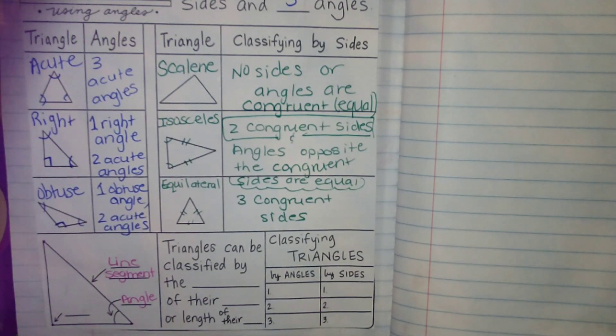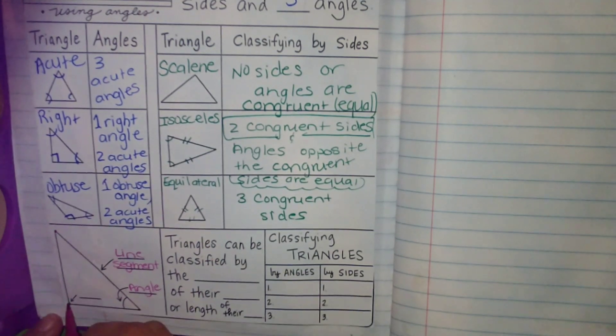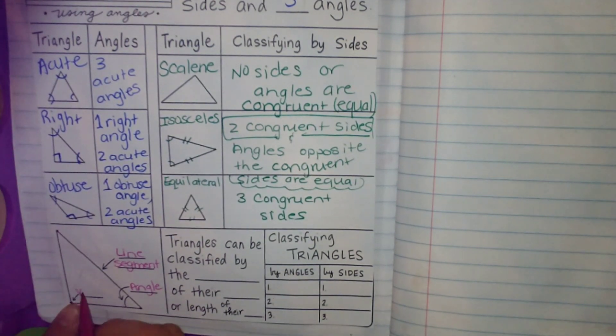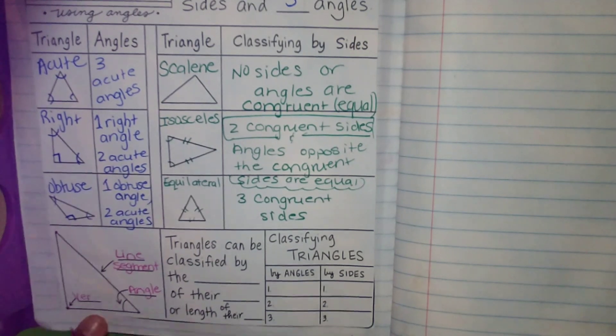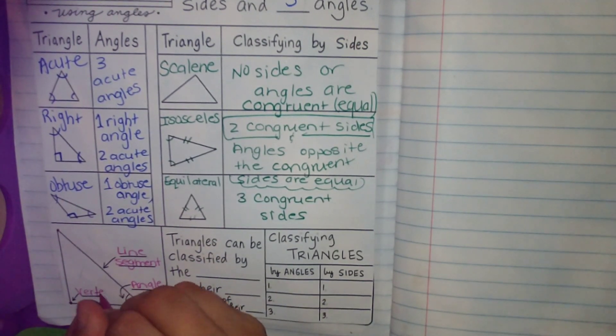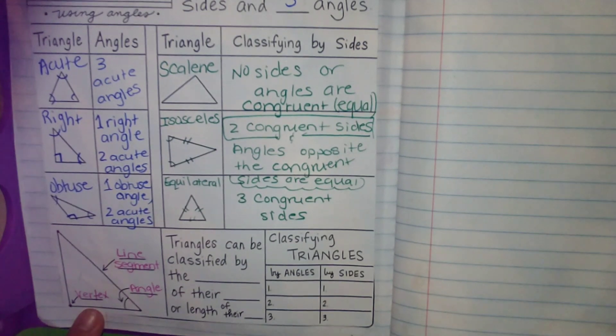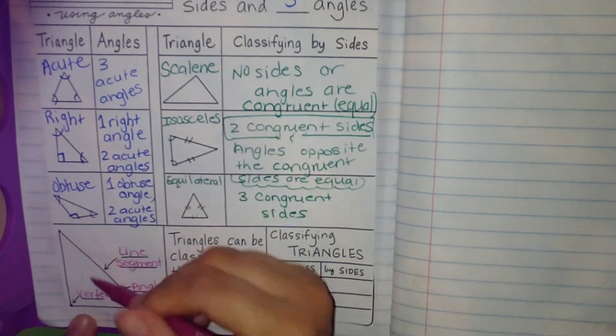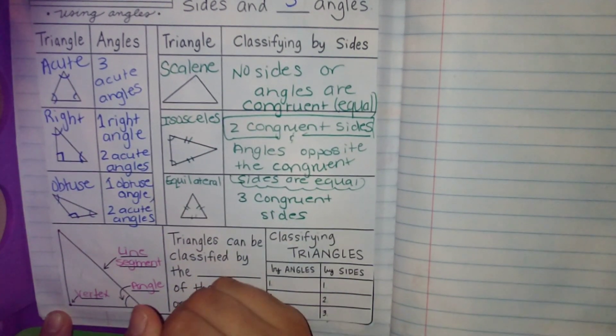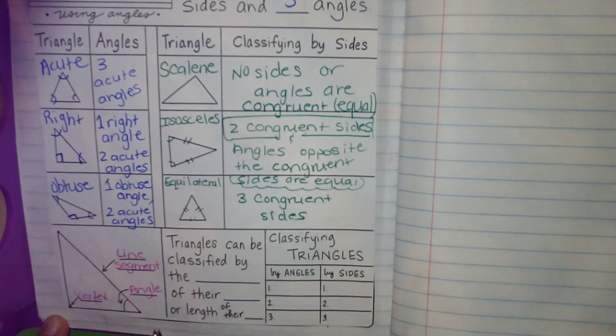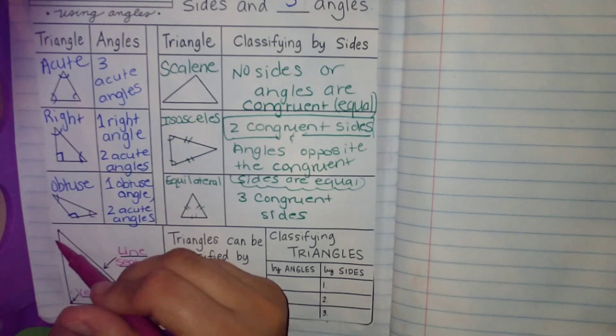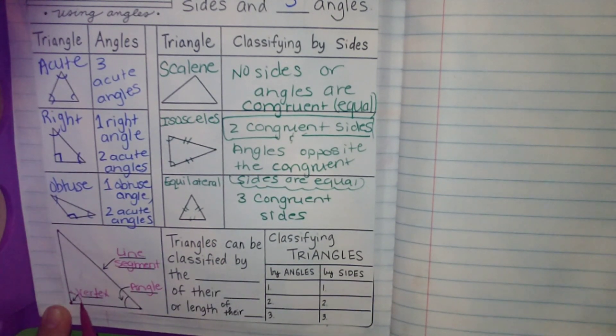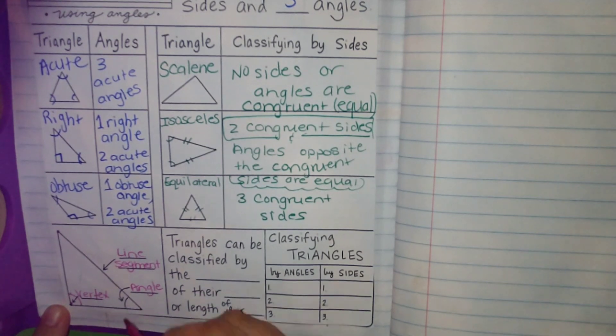And then an angle is where the two line segments meet. Now the new definition that we're going to learn is where the two sides meet. They make an angle, but the point where they meet is called a vertex. So let me repeat that. There are two line segments. They come to one point where they meet, and that is called the vertex. When we go further up the line segments, this measure right here is called an angle.